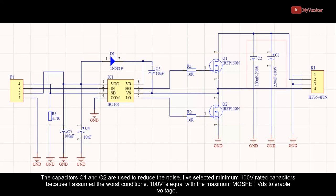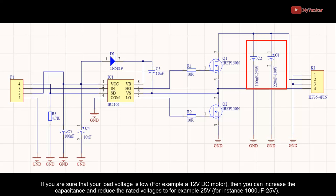Capacitors C1 and C2 are used to reduce noise. I've selected minimum 100 volt rated capacitors because I assumed the worst conditions - 100 volts equals the maximum MOSFET drain-source tolerable voltage. If you're sure that your load voltage is low, for example a 12 volt DC motor, then you can increase the capacitance and reduce the rated voltages, for instance 1000 microfarad 25 volts.